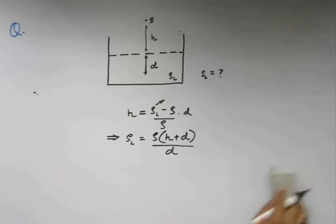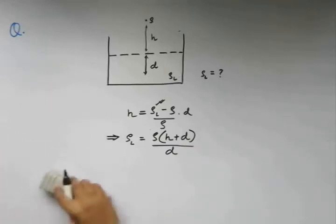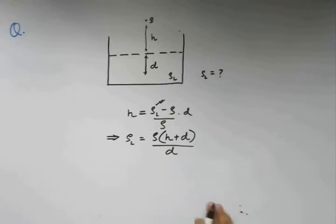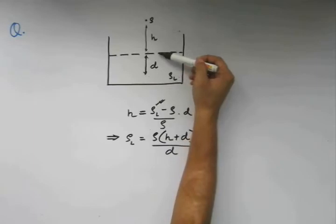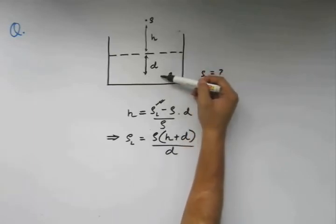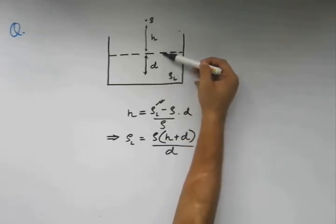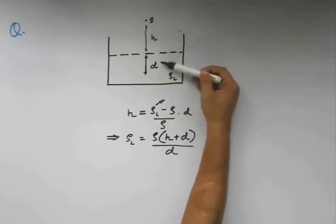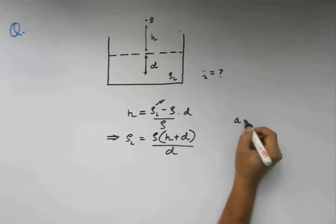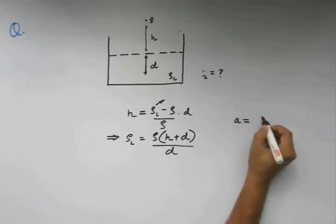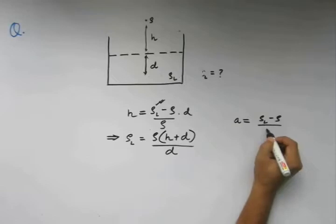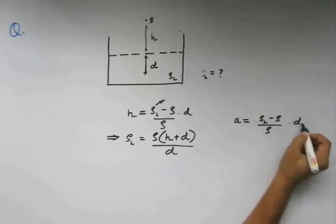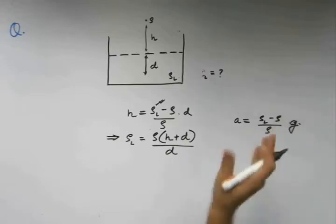Because of the absence of all other forces and effects, what we will have is the body going down this height first, then traveling this depth, and then again going back up because of the negative acceleration, which was found to be a equals rho l minus rho by rho times g. This was the acceleration we found out.